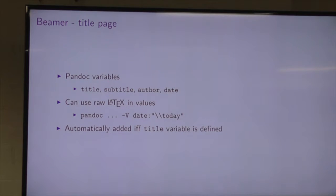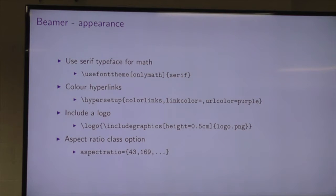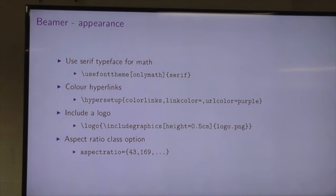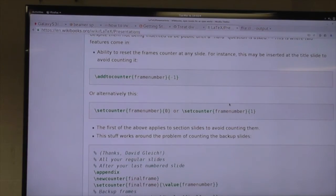You can use raw LaTeX in variable values, just make sure your backslashes are adequately escaped. For general appearance: Beamer's default is to use a sans-serif typeface for math, which I think looks absolutely horrible. But you can add \usefonttheme{onlymath} to the preamble to make the math use a serif typeface. You can colour your hyperlinks, set colours for internal and external links, add a logo, and adjust the aspect ratio.